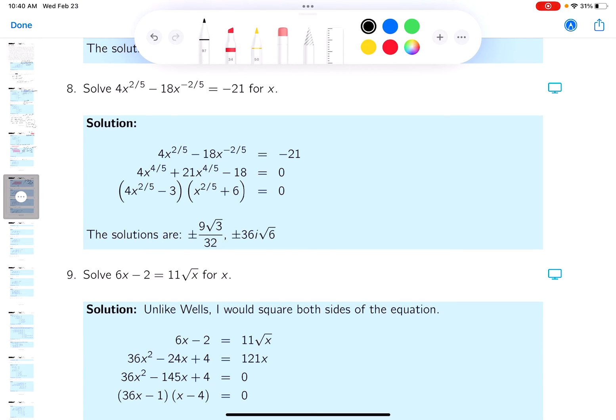But I am looking at the key, by the way. What I would do, notice I got a negative exponent and a positive exponent. So what I want to do is I want to multiply both sides by x to the two-fifths. And what would I get over there?